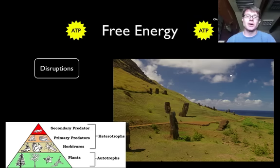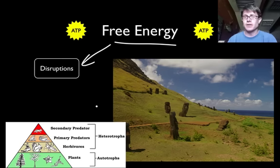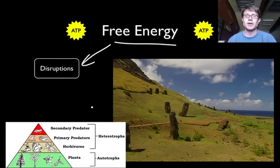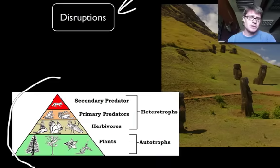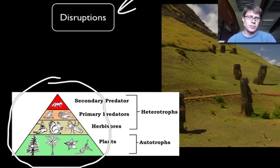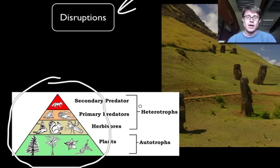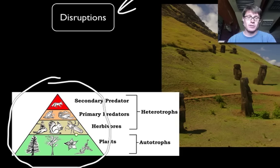What happens if we have disruptions to the amount of free energy we have? If an individual stops eating, that eventually leads to death — a decrease in free energy always has that consequence. In a food web, plants or autotrophs are fed on by herbivores and carnivores above them. A decrease in free energy — like a decrease in light — impacts the plants and ripples through the entire food web above them.